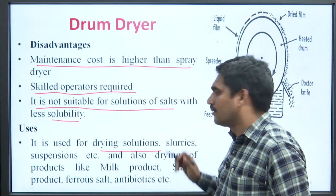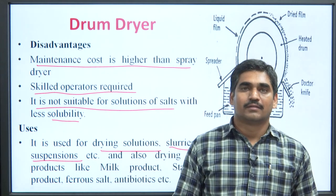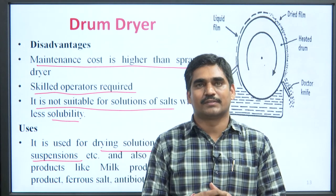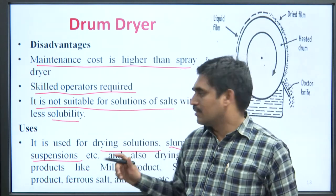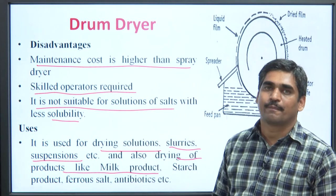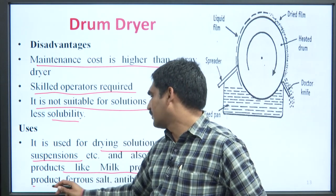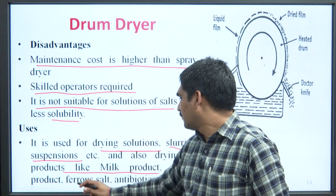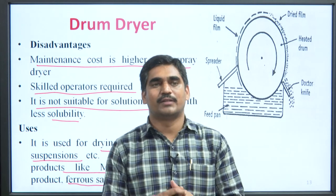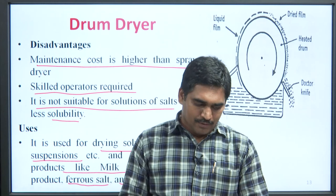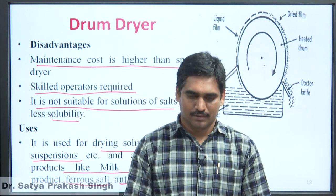Uses of drum dryer: it is generally used for drying solutions, slurries, and suspensions. It is also used for drying milk products, starch products, ferrous salts, and antibiotics. These are the advantages, disadvantages, and uses of the drum dryer used in the drying process.